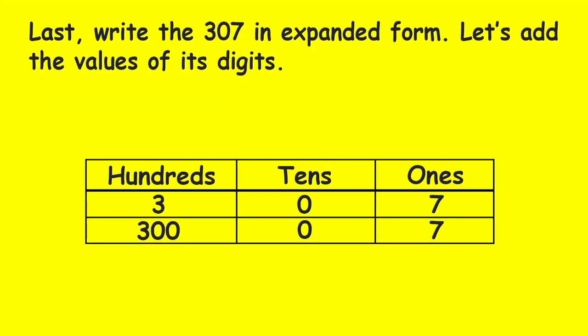Last, write 307 in expanded form. Let's add the values of each digits. So, 307 is equal to 300 plus 0 plus 7.